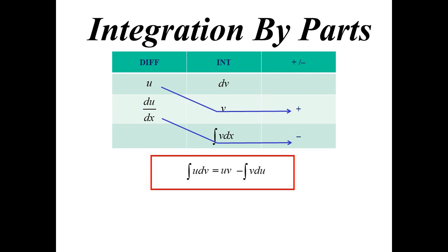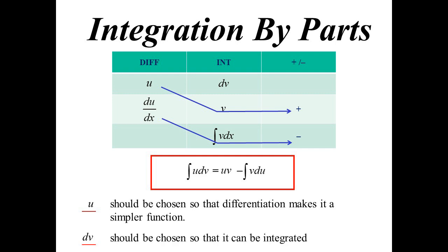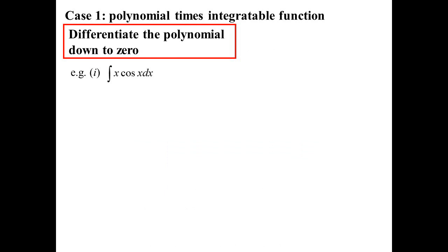Just as before, you choose U so that differentiation makes it easier. And you choose V something that you can integrate. So let's have a look at the different cases and how it works. There's that X cos X one. You remember the repeated one that kept going. So we set it up. X cos X. Now in your differentiation column you just keep going down until you hit zero. So X, one, zero.